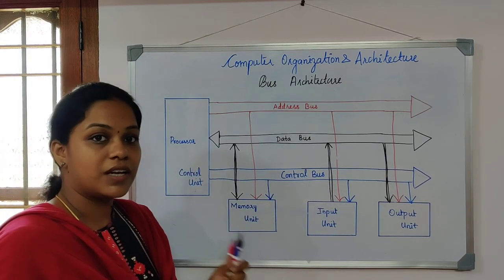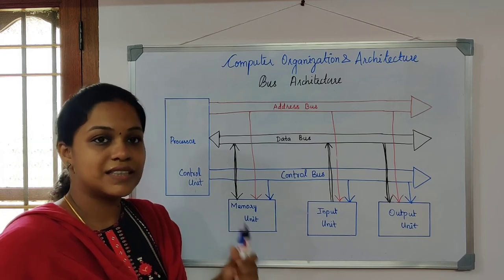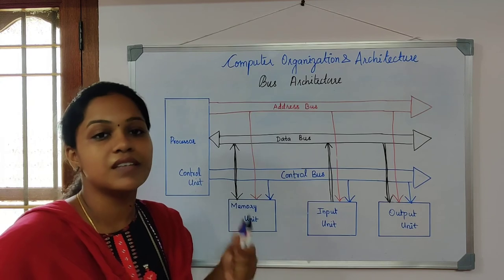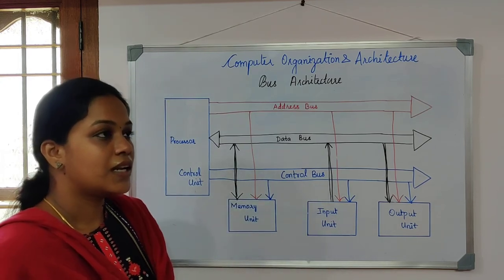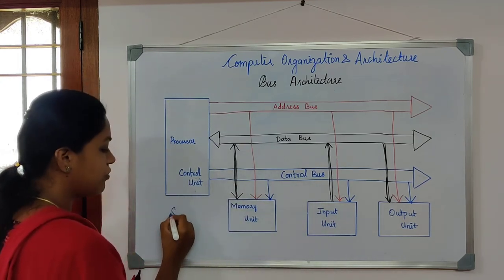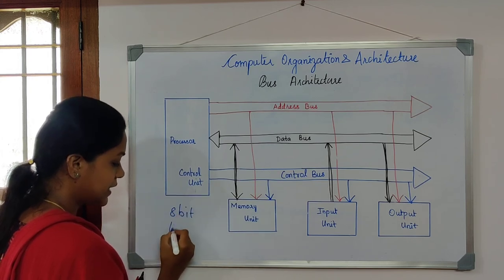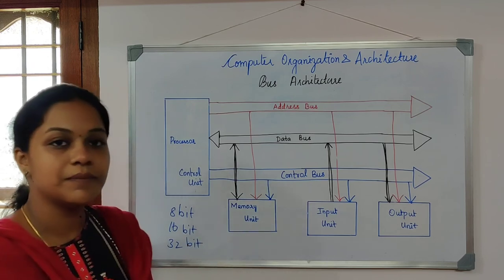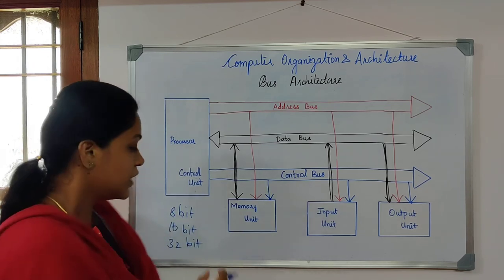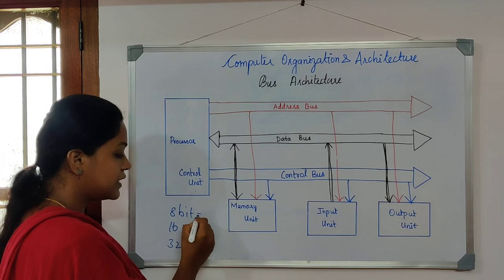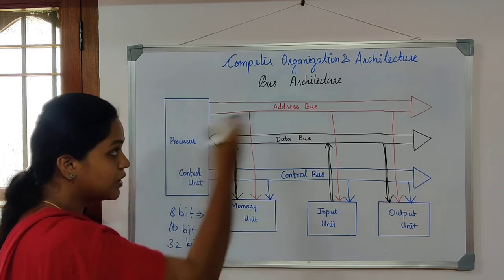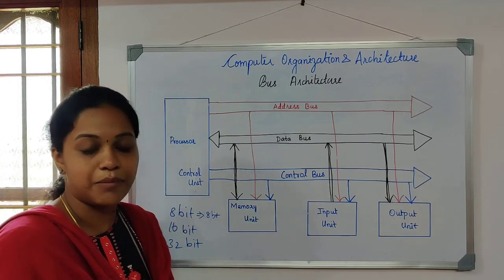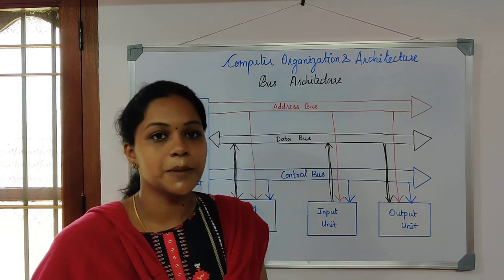To conclude, a bus is a group of wires serving as a communication link between each and every component of the computer system. The bus can be 8-bit, 16-bit, or 32-bit depending upon the architecture — the size of the bus varies accordingly. An 8-bit bus carries 8-bit information, and a 16-bit bus carries 16-bit information through the bus. That's all about bus architecture; we will see the next topic in the next lecture.